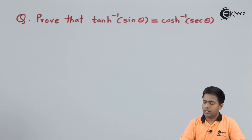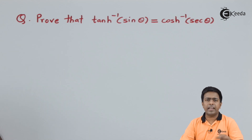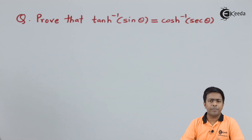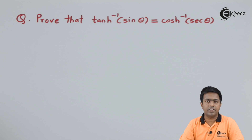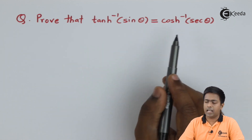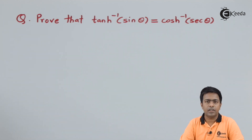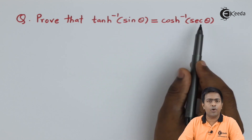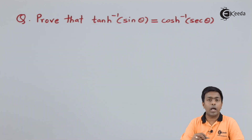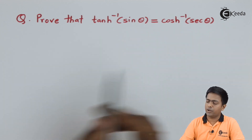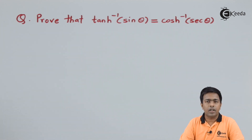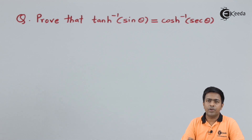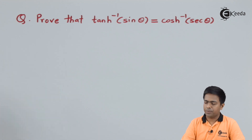To prove that these two sides are equal we are going to start with one side. I'll start from the RHS, so the right hand side is cosh⁻¹(sec θ). To show that its value equals tanh⁻¹(sin θ), I need to find the value of the right hand side first, using the formula of cosh⁻¹(x).